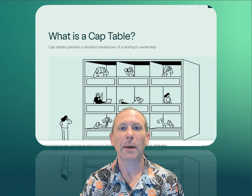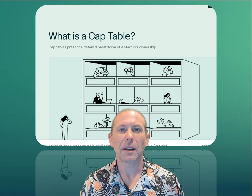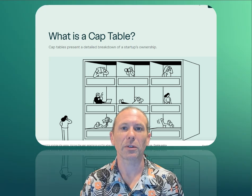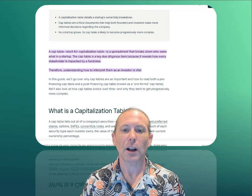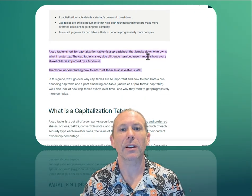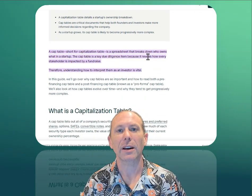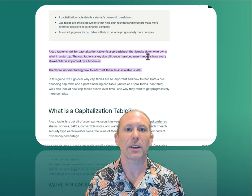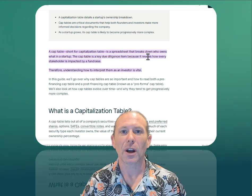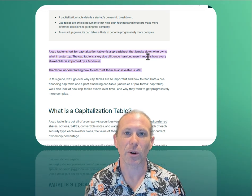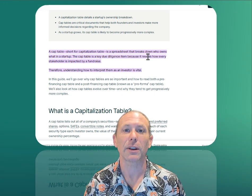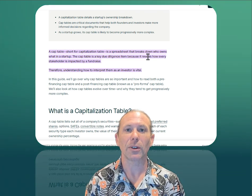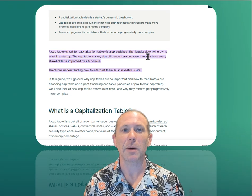What is a cap table or capitalization table? Basically, a cap table is simply a list of shareholders of a company. They call it a cap table because the capitalization table was originally the technical term used for the shareholder registry. But you could call it many other things: a shareholder register, a shareholder list, or any other name you might give it. The purpose is just to list the shareholders, their names, and how many shares they own.